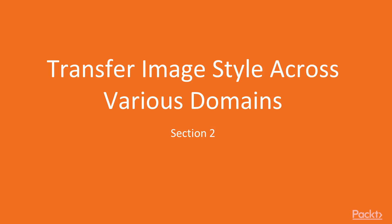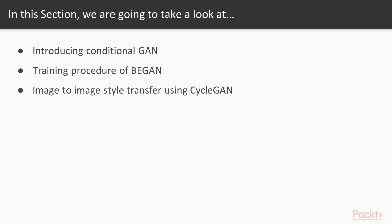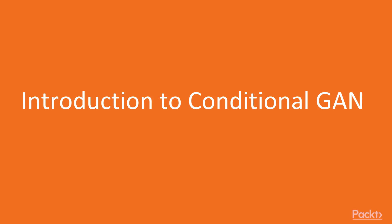Hi guys, welcome to the second section: Transfer Image Style Across Various Domains. In this section, we will start with Introduction of Conditional GAN. We will then move to Training Procedure of BGAN. Finally, we will see Image to Image Style Transfer with CycleGAN. Now we move on to the first video of this section, which deals with Introduction to Conditional GAN.